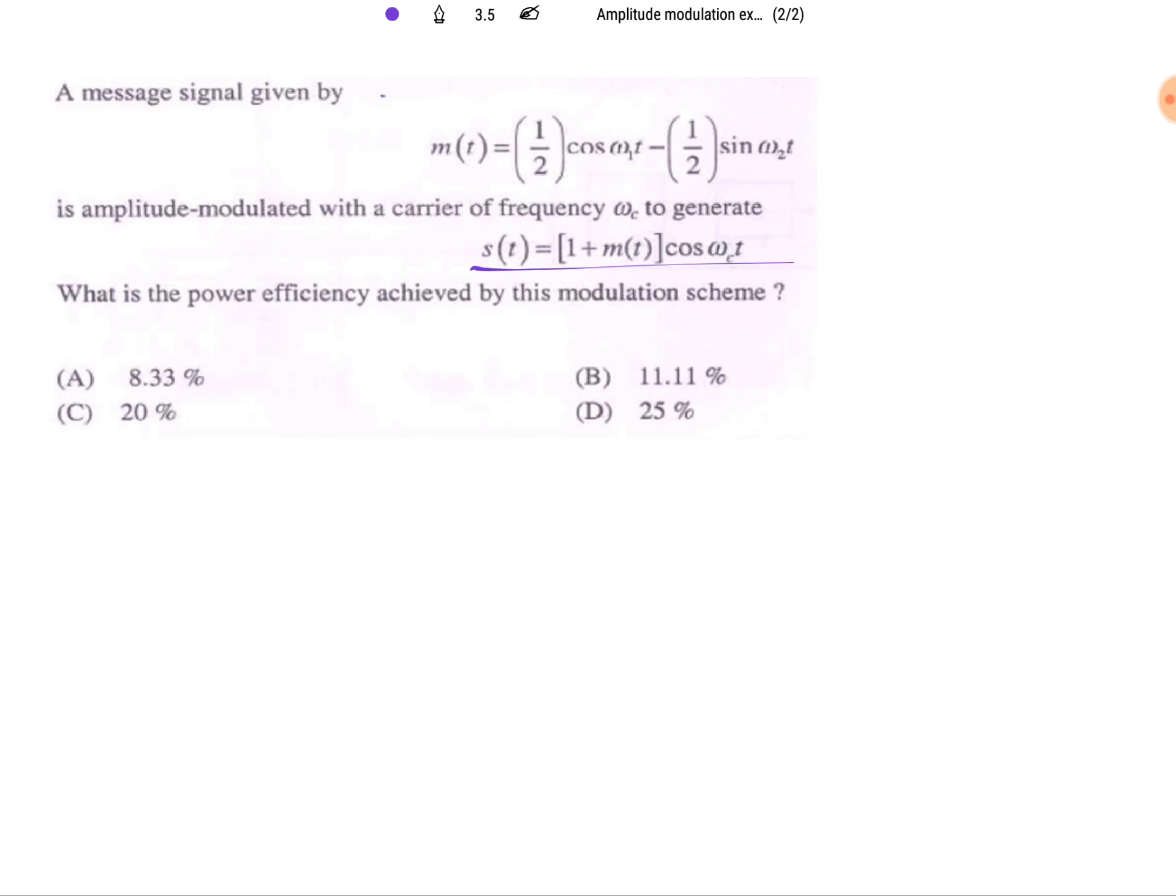To calculate power efficiency, first we need to identify the modulating index of this modulating signal. Here multi-tone modulating signal is there. So st will be 1 plus half cos ω₁t minus half cos ω₂t into cos ωct.